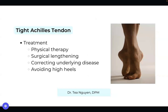How do we treat a tight Achilles tendon? Physical therapy is always the first line. If that's not sufficient, we can move into surgical lengthening to make the tendon longer, which can also be done through a minimally invasive technique or more conventional open approach depending on the individual's anatomy. We also want to correct the underlying diseases causing the stiffness — if someone has diabetes, we talk about glycemic control and avoiding high heels when there's pain at the ball of the foot.